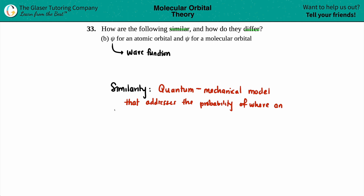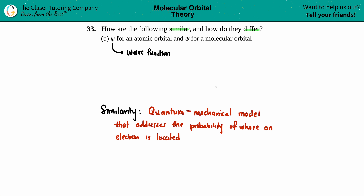Whether you're talking about this model in an atomic orbital, you're still talking about the probability of where an electron is located, versus in a molecular orbital, where the electron is located. To give you an idea, if I had to draw an atomic orbital, you would only be drawing an s orbital or a p orbital. S orbitals are circular, so this would be your atomic orbital.